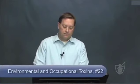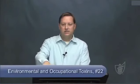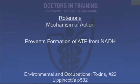Rotenone is a crop insecticide that has also been used as a fish killer — it's absorbed very well through gills but not well in the human gut, so you can eat fish killed with it. It prevents ATP production from NADH, blocking cellular energy in the mitochondria. Symptoms include nausea, vomiting, seizures, and death, but humans need very high exposure to develop serious symptoms.